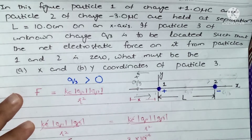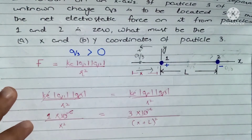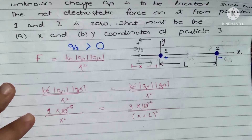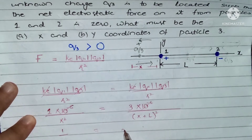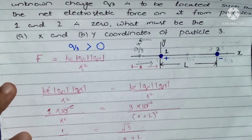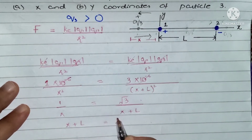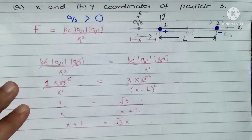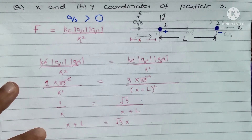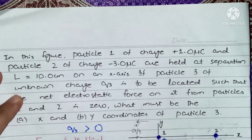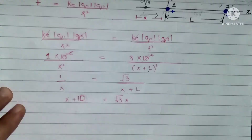The 10⁻⁶ terms cancel on both sides, leaving 1/x² = 3/(x + L)². Taking the square root of both sides gives 1/x = √3/(x + L). Cross multiplying gives x + L = √3·x. Substituting L = 10 centimeters — as given in the question — we get x + 10 = √3·x.